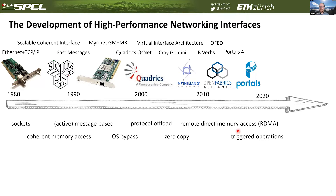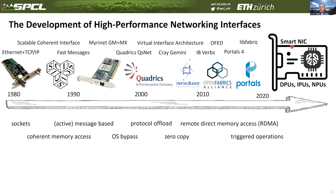Portals extended RDMA by enabling triggered operations, so you could implement more complex chained remote DMA operations. Today we have SmartNICs, DPUs, IPUs, NPUs, XPUs — I don't know what kind of PU is going to show up next week, but I'm sure somebody will come up with a new term. Data processing unit, infrastructure processing unit, network processing unit — and I'm sure there will be more. The question is: how do we go forward? As a researcher, I want to establish a roadmap for where we should go with these SmartNIC architectures.